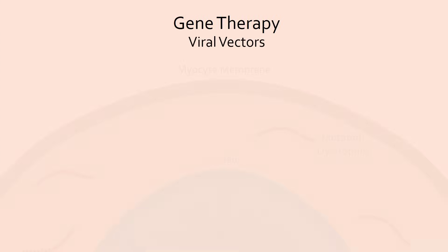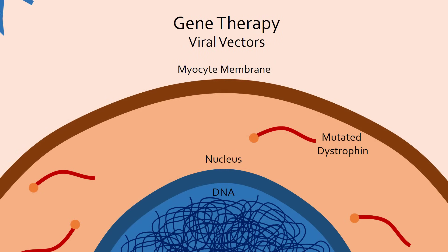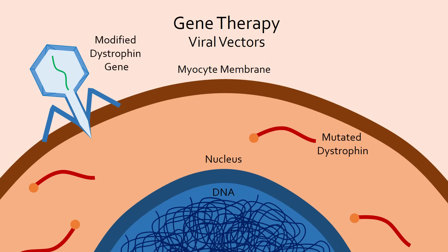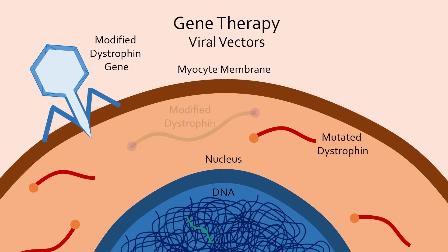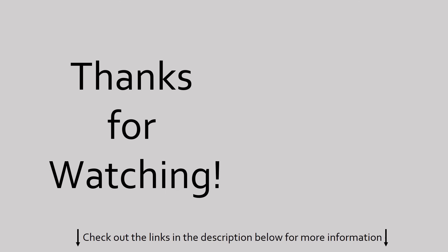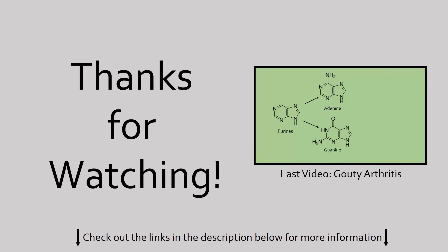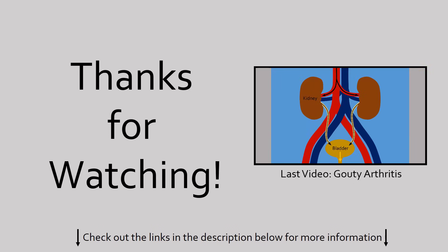Another fascinating treatment method is by using viral vectors. Some viruses are known to incorporate their own DNA into human cells. Scientists have been able to take advantage of this to make viruses carry a modified dystrophin gene instead of viral genes, which gets incorporated into DMD myocytes, allowing them to produce the modified functional dystrophin protein. The main limitation to these two techniques is ensuring they affect myocytes but not other cells. Gene therapy is still in its early stages with mixed success in human patients, but with further research, a cure to DMD seems to be near in the future.